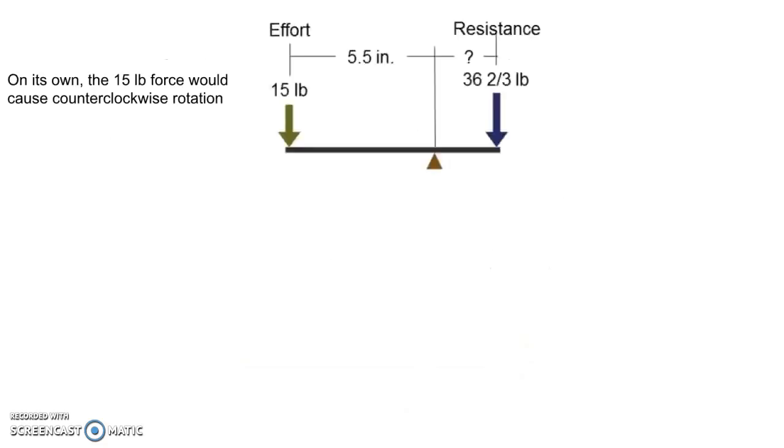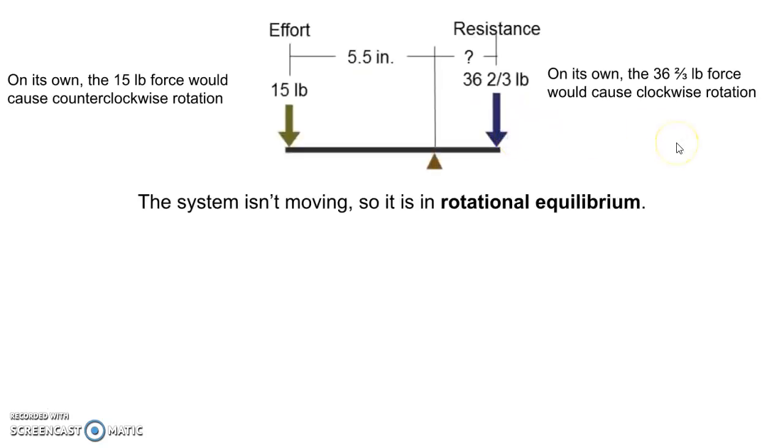Let's take a look at this. If it were only the force on the left, only the 15-pound force, it would cause a counterclockwise rotation because without this force to balance it, this seesaw would want to go this direction counterclockwise. If the purple force, the blue one over here, was on its own and the other one doesn't exist, then the seesaw would want to go clockwise. We have a counterclockwise moment from the left side and a clockwise moment from the right side.